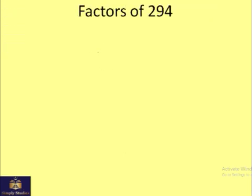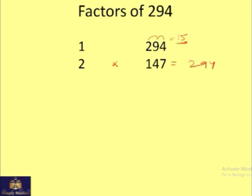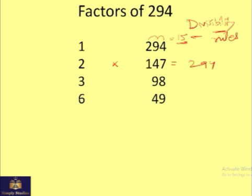Similarly, we can find factors of 294. 1 and 294 are factors. 2 and 147 are factors since 2 times 147 is 294. To check divisibility by 3, we add digits: 2+9+4 equals 15, which is divisible by 3, so 3 times 98 gives 294. 4 and 5 don't divide it, but 6 does — 6 times 49 gives 294.